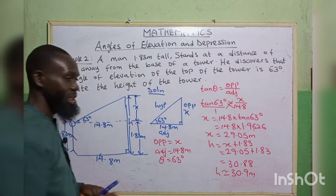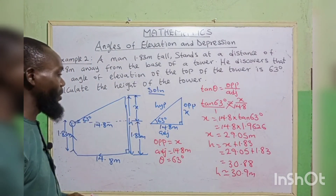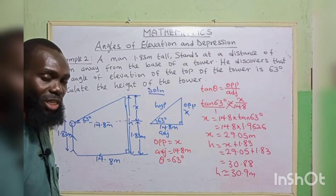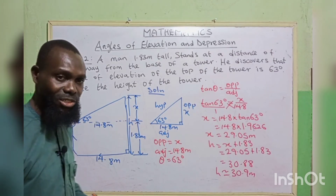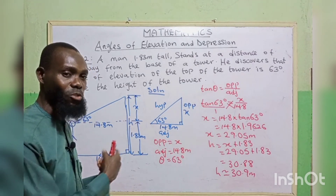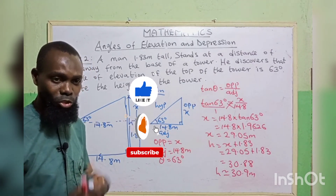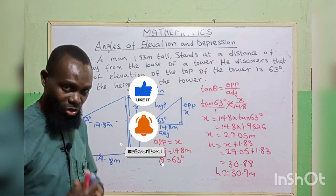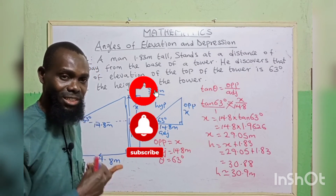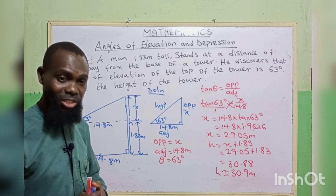That is the height of this tower. This is one of the ways of calculating distances in angles of elevation and depression. If you find value in this, kindly subscribe to my channel and click the notification bell for subsequent content. I'll meet you in the next class on distance in angles of elevation and depression. Thank you.